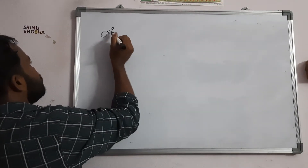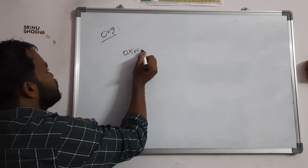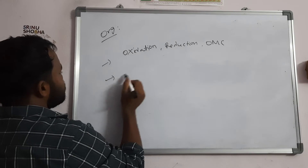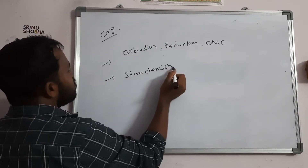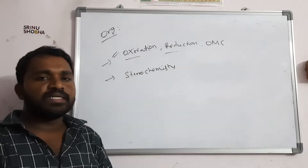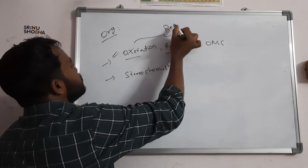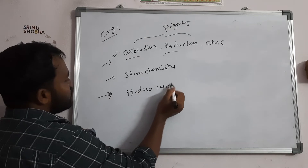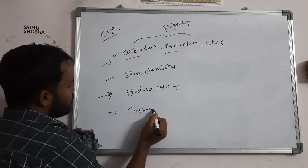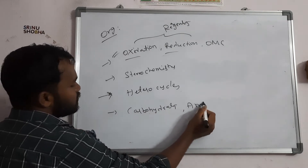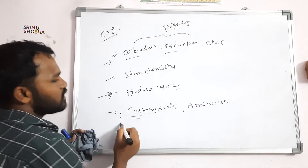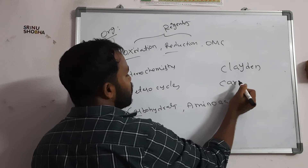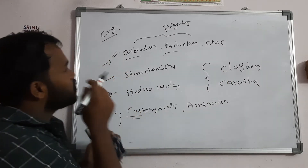For organic chemistry, you should focus on oxidation, reduction, OMC, and reagents — we can simply say reagents. Also focus on stereochemistry and heterocyclics — these are the core areas. They will mostly ask oxidation, reduction, OMC, and reagents. You can also prepare carbohydrates and amino acids, as they are sometimes asked. Focus on the 2-mark questions. The best books for organic chemistry are Claydon and Carotar.